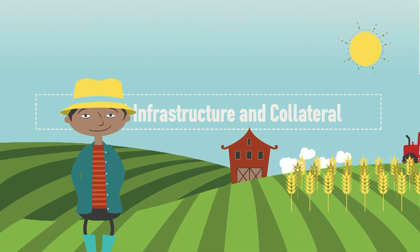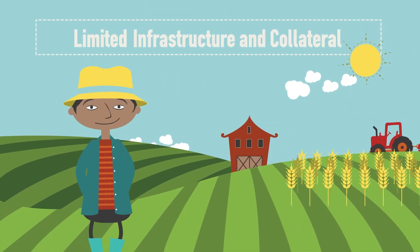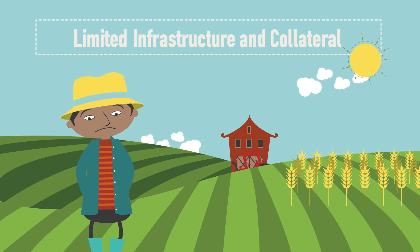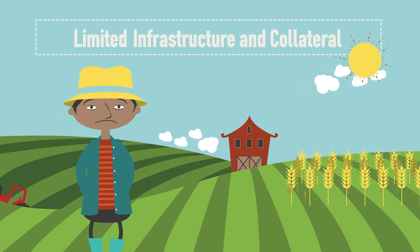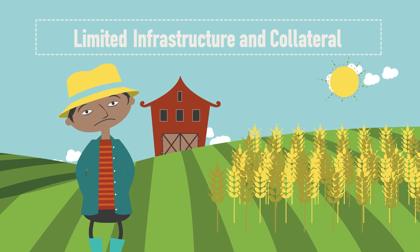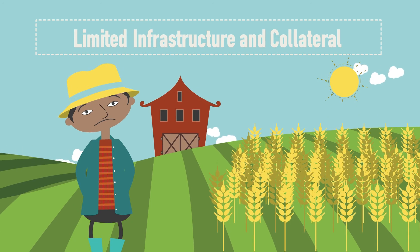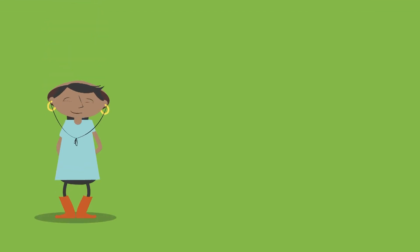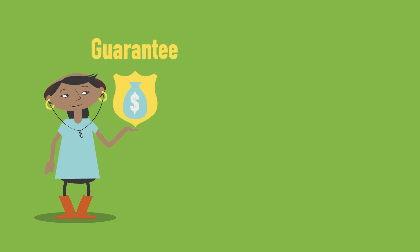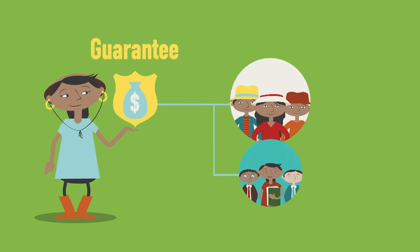Limited infrastructure and collateral. Some associations are heavily undercapitalized with very little in the way of assets that might be used as security for a loan. When this is the case, a loan officer may have to take guarantees from the board and the membership in place of sufficient capital.